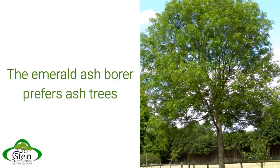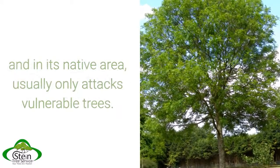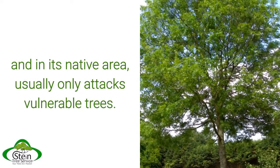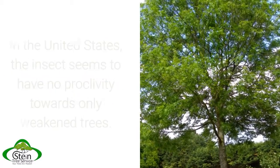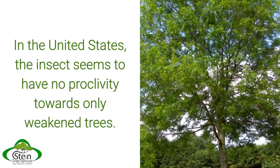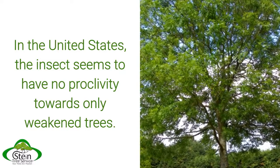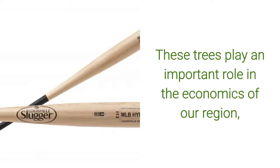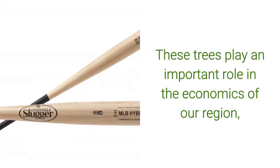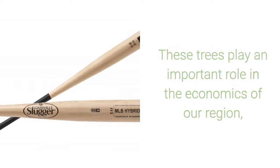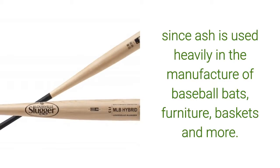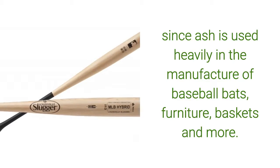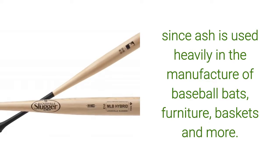The emerald ash borer prefers ash trees and in its native area usually only attacks vulnerable trees. In the United States, the insect seems to have no proclivity towards only weakened trees. These trees play an important role in the economics of our region, since ash is used heavily in the manufacture of baseball bats, furniture, baskets, and more.